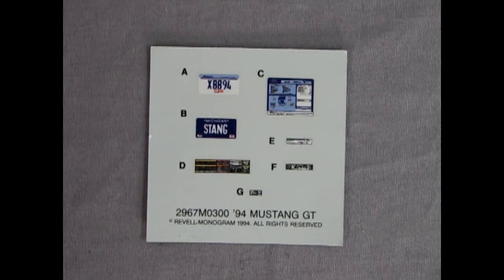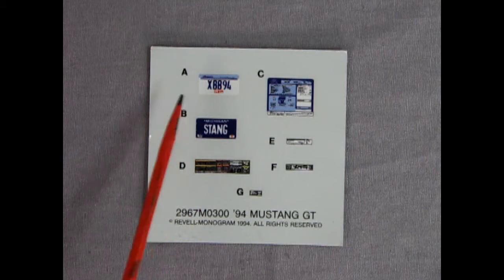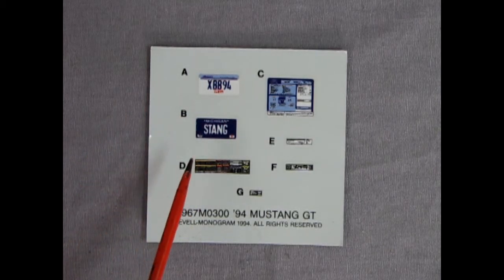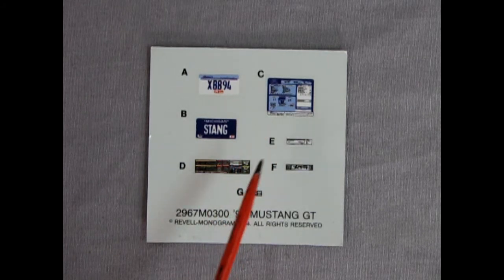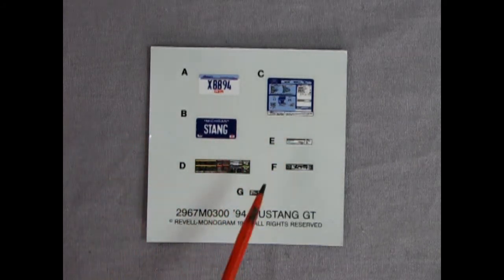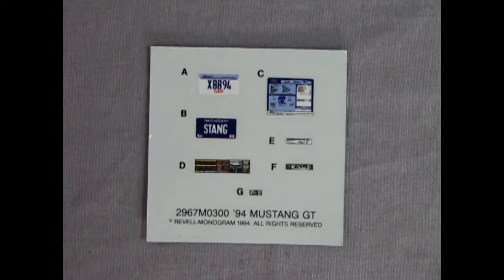So here we are again looking over the decal sheet. We've got an Illinois XBB 94 license plate right there. And then a Michigan Stang one down below. And then we've got a window sticker for our dealership that has all the info of the car on there. And then all the decals which go in the engine bay just to dress it up.